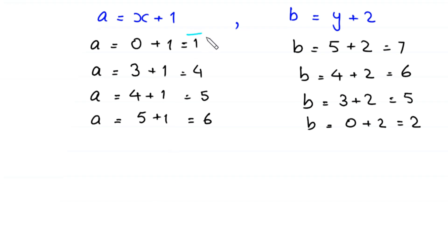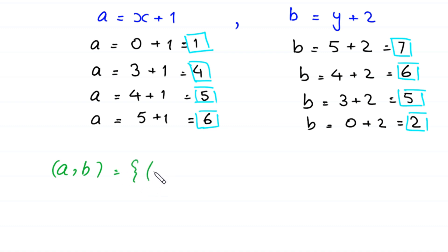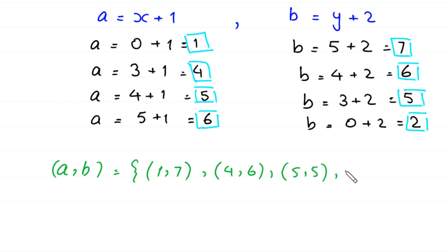So the solution pairs (a, b) are: the first pair is (1, 7), the second pair is (4, 6), the third pair is (5, 5), and the fourth pair is (6, 2). This is the final answer of this equation.